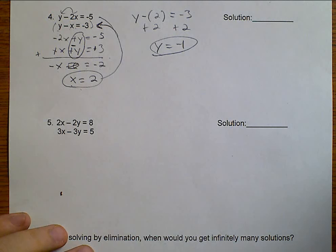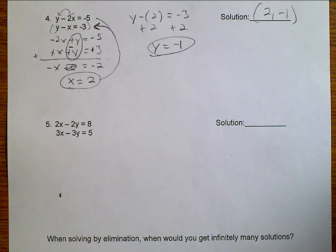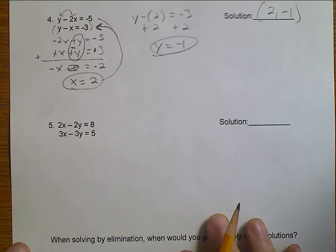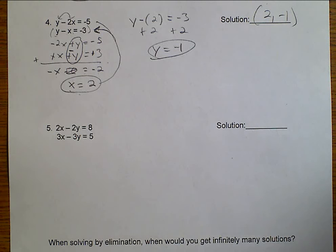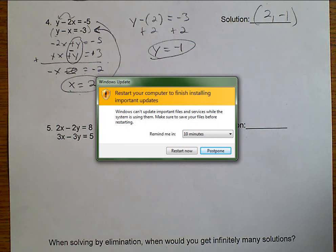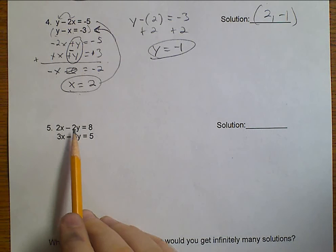Now that I have what X is, I'm going to plug it back into one of my equations. This time, I'm going to use the second one because it has slightly smaller numbers. So, Y minus 2 equals negative 3. Well, if I add 2 to both sides, I get that Y equals negative 1. So, Y equals negative 1, X equals 2. My answer is 2, negative 1.